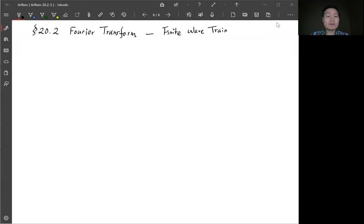We continue on section 20.2 Fourier transform. This example is for a finite wave train and it also illustrates an important property of Fourier transform which is related to the uncertainty principle of quantum mechanics.